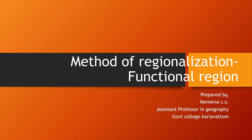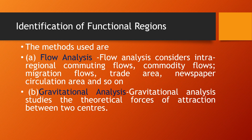In this section we are discussing the method of regionalization of functional regions. Mainly two methods are used for the identification of functional regions: flow analysis and gravitational analysis. Flow analysis considers intra-regional commuting flows, commodity flows, migration flows, trade areas, newspaper circulation areas, and so on.